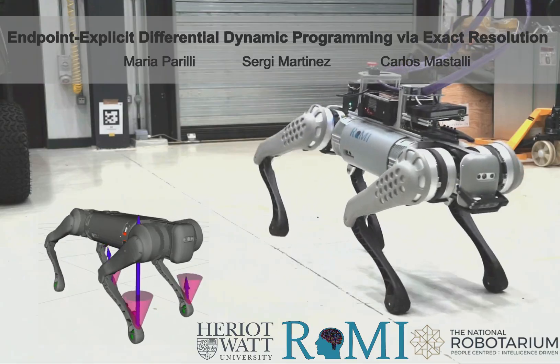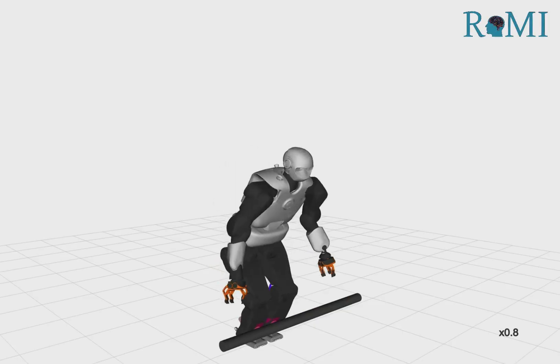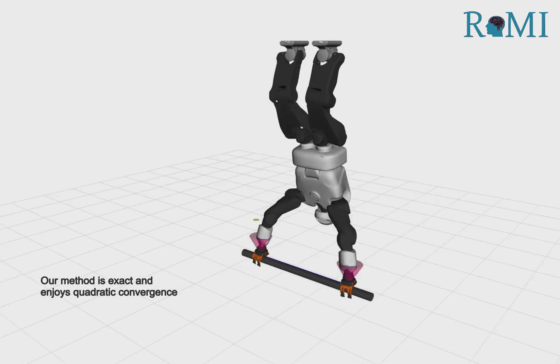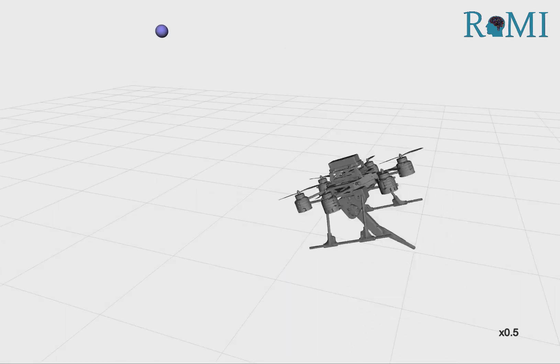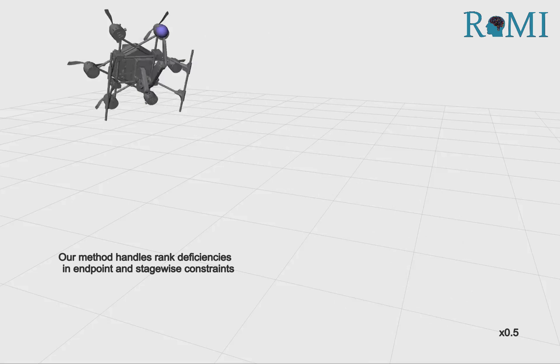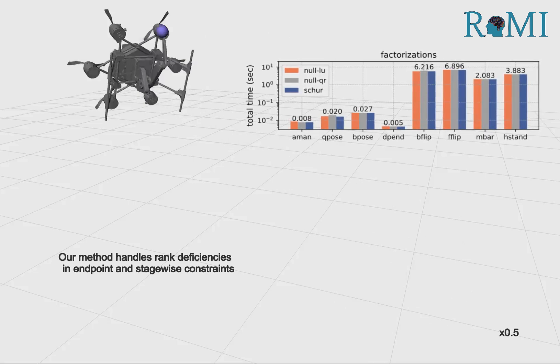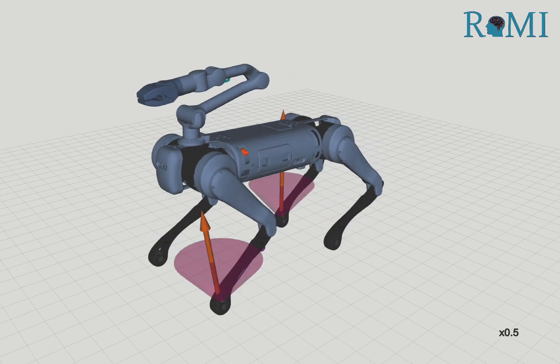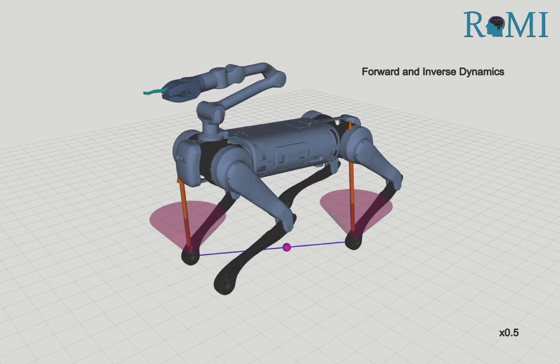Compared to state-of-the-art approaches, our method is exact and exhibits quadratic convergence. It effectively handles rank deficiencies without increasing computational cost. It applies to optimal control problems involving both forward and inverse dynamics.